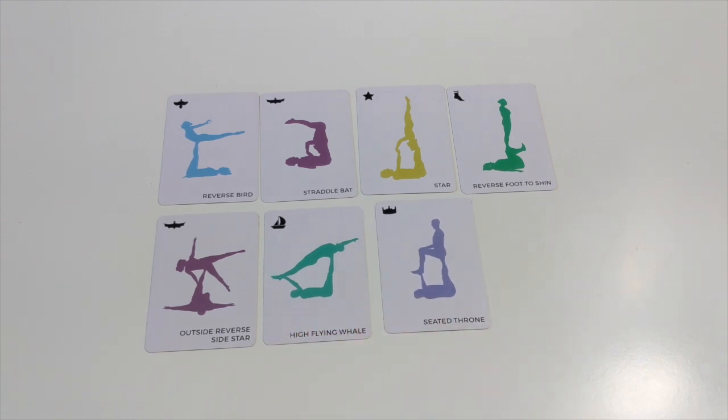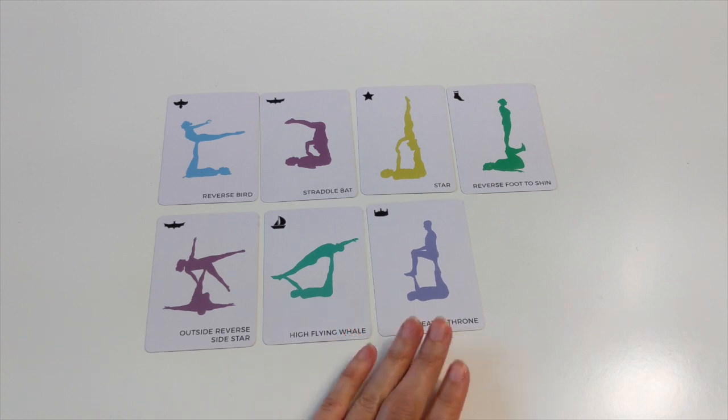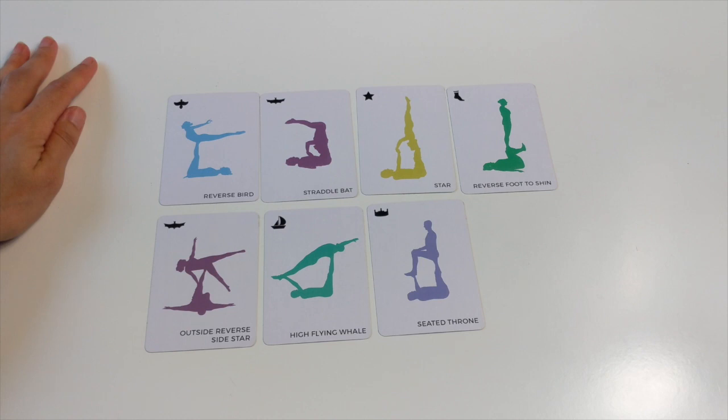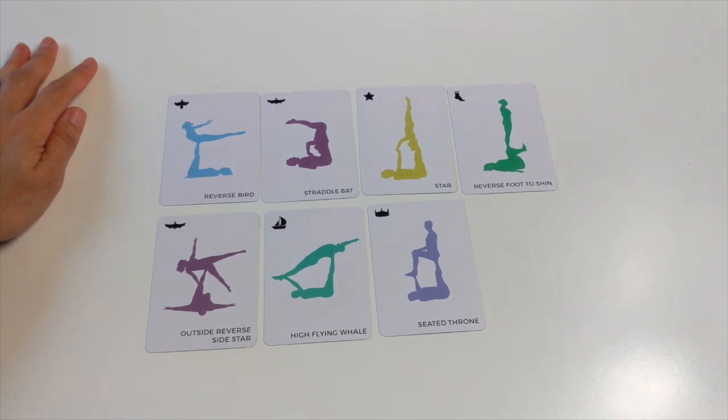Well it took me a little longer to get this flow together today but here it is: reverse bird, straddle bat, star, reverse foot to shin, outside reverse side star, high-flying whale, and seated throne.